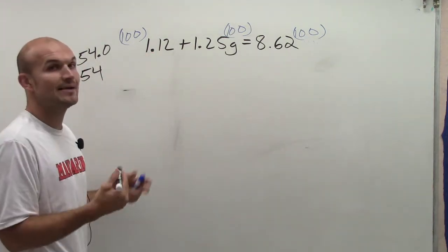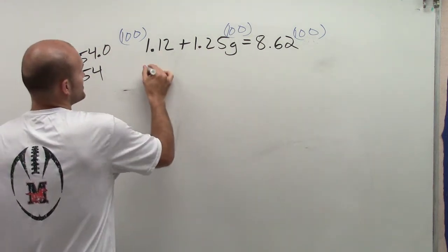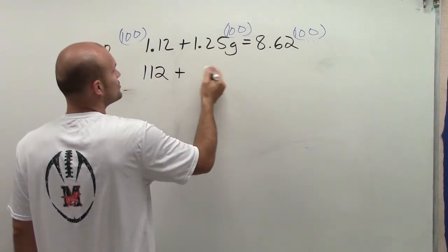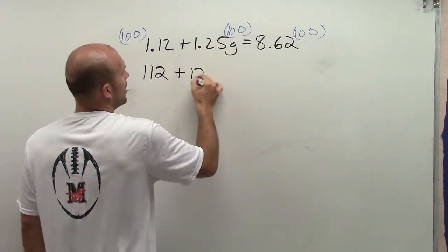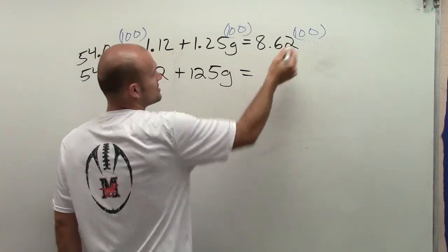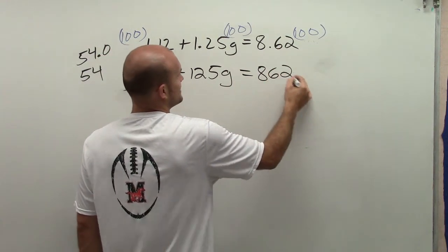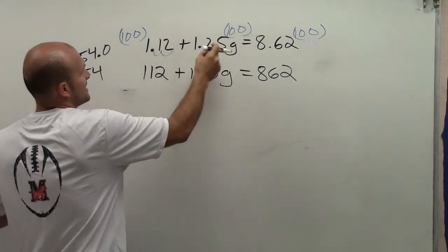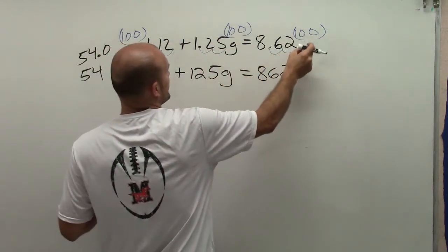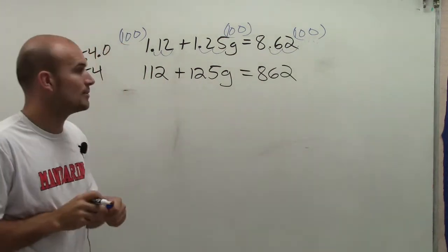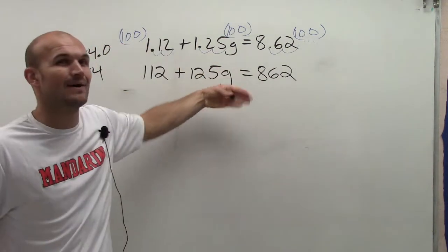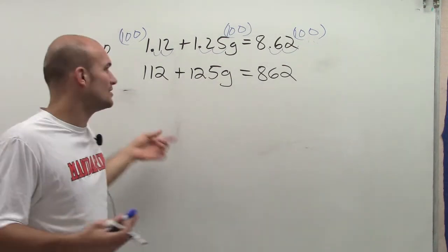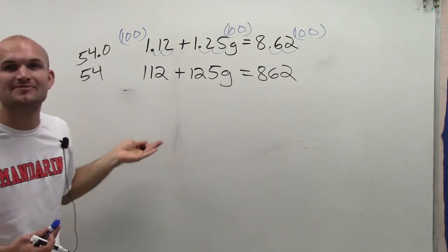So 1.12 times 100 is equivalent to 112, plus 1.25g times 100 is 125g, equals 8.62 times 100 equals 862. Now, really what I did was, by multiplying this, you could say you moved your decimal point over two units, or two decimal places. And now I don't have to write those decimal places in. You could, but there's really no point. 54.0 is exactly the same as 54.